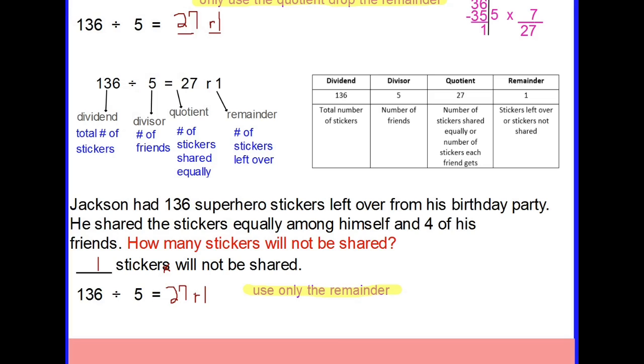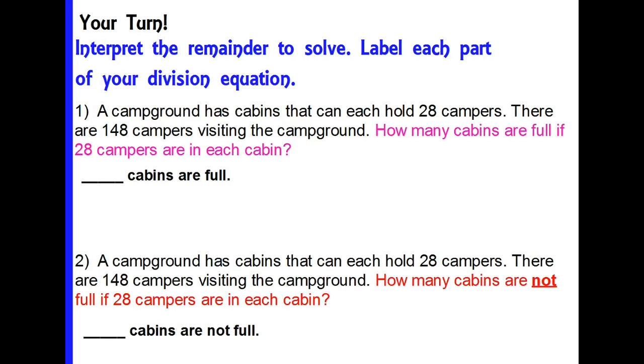Now it's your turn to practice. You are going to interpret the remainder to solve. You're going to label each part of your division equation. When you're looking at numbers one and two, you will see that they are both related problems but the questions are different and that's what you need to focus on. I will let you know that you see the number 28 twice within this problem, but when you read it you will understand that you're not going to use the number 28 twice in your division equation, only once. The same thing with number two. Make sure that you are labeling each part of your division equation and then go back and solve these two questions based on what the question in the problem is asking you to do.